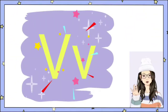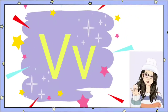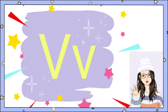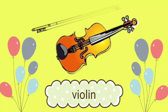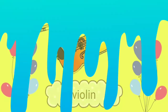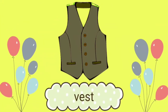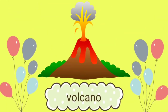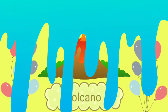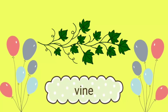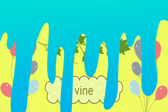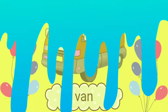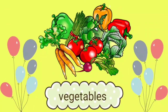And the letter V. Letter V has the sound V. Again, letter V, sound V. As in violin, vest, volcano, vine, van, and vegetables.